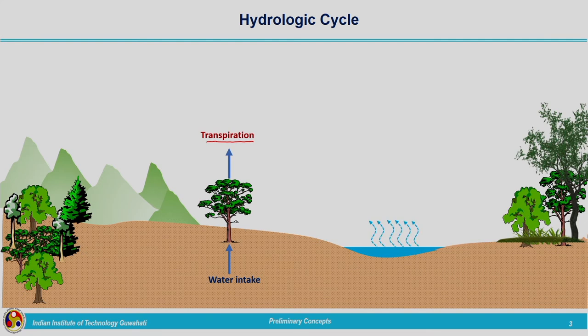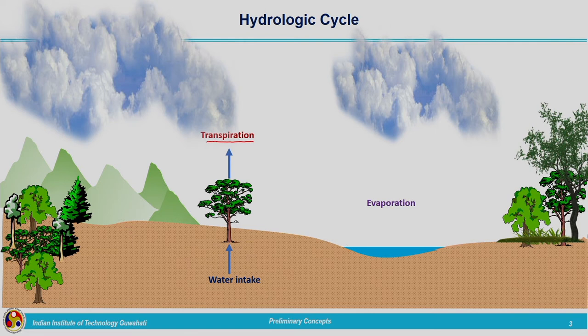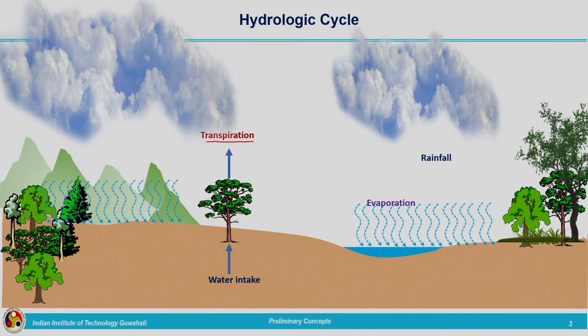Heat energy will be absorbed by the water present in the water body, it will be converted into vapour form and will move upward into the atmosphere, and clouds will be formed. More and more evaporation takes place depending on day-to-day conditions, adding more water vapour into the atmosphere. Then condensation of the clouds takes place — the air mass becomes saturated with water vapour, or the temperature drops below the dew point temperature — and as a result we get precipitation on the earth surface.